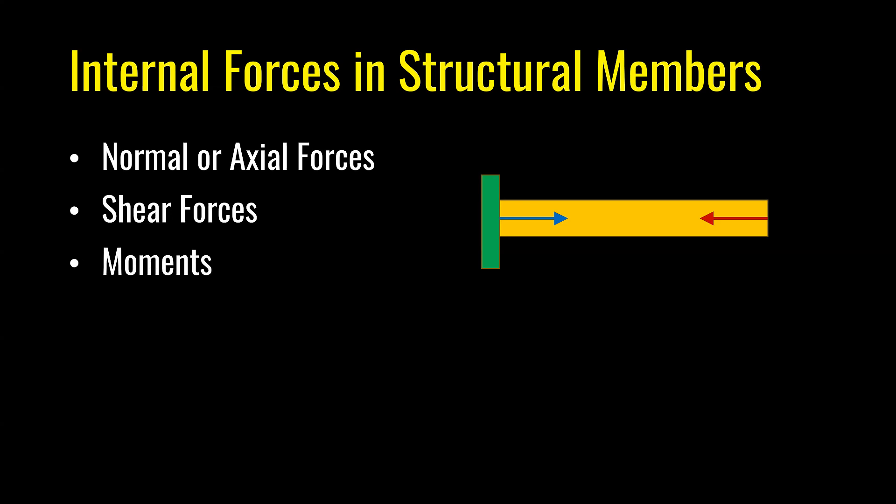To figure out internal forces, we can use method of sections. Imagine if we have a beam like this and we want to figure out internal forces at point C. To find out, we can make a cut through point C.